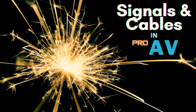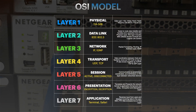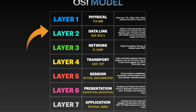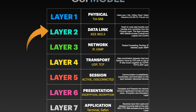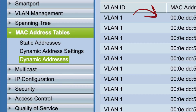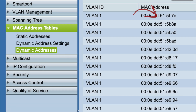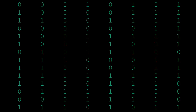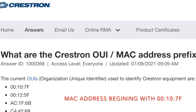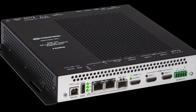In the cables and signals video, we went over layer 1, which is the physical layer in the OSI model. The MAC address is on layer 2, which is considered the data link layer in the OSI model. This MAC address is the fingerprint of the network device. It's unique to each device and the first three octets or first three bytes usually identify the manufacturer of the network device. For example, when I do an IP scan on an AV network, if I see 00-10-7F, I know this is from Crestron — though not all of their devices begin with those characters.